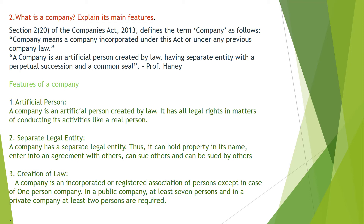The features of a company are as follows. First, a company is an artificial person created by law, meaning it has all legal rights in matters of conducting business like a real person. Second, it is a separate legal entity — it can hold property in its own name, enter into agreements, sue others, and be sued by others. Third, it is a creation of law — a company is an association of two or more persons, although this is not applicable in the case of a One Person Company under the current Companies Act of 2013.